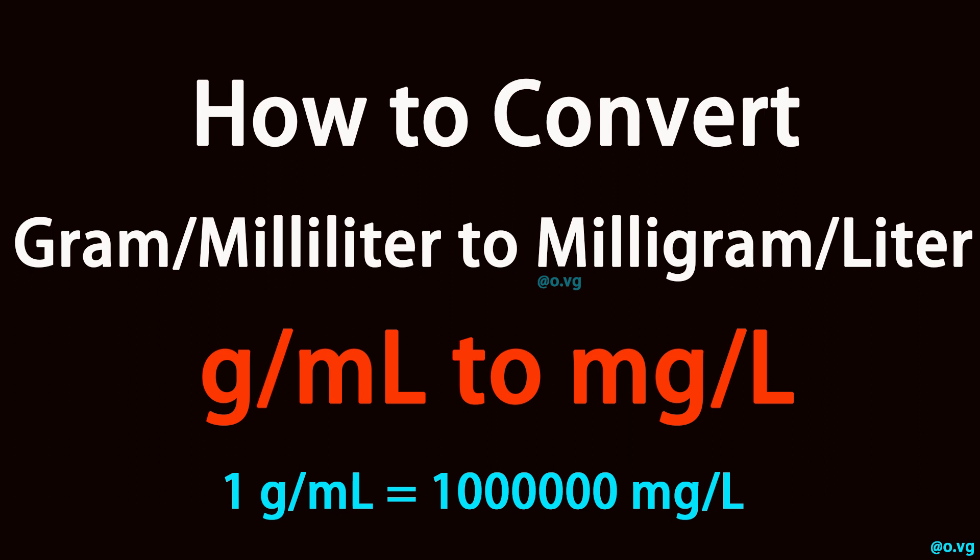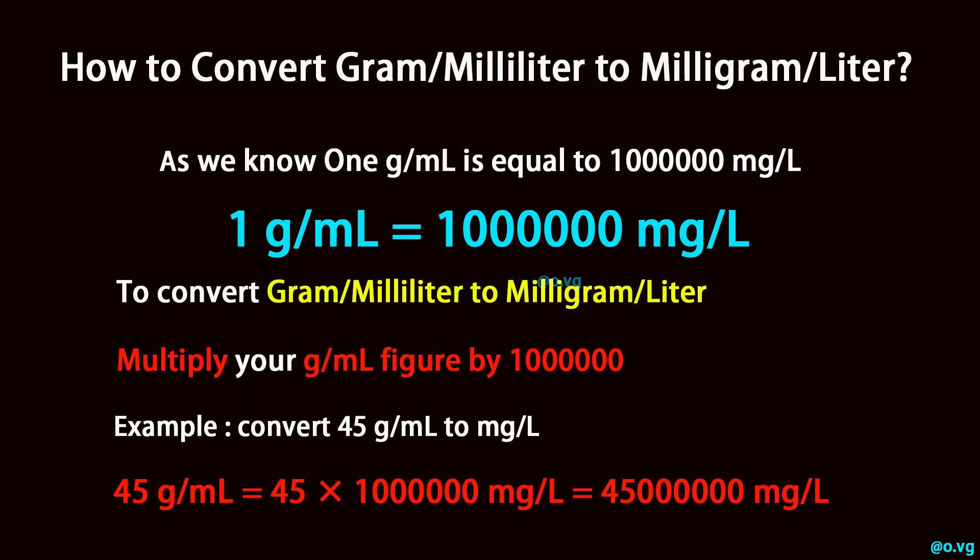How to convert gram per milliliter to milligram per liter? As we know, 1 gram per milliliter is equal to 1 million milligram per liter.